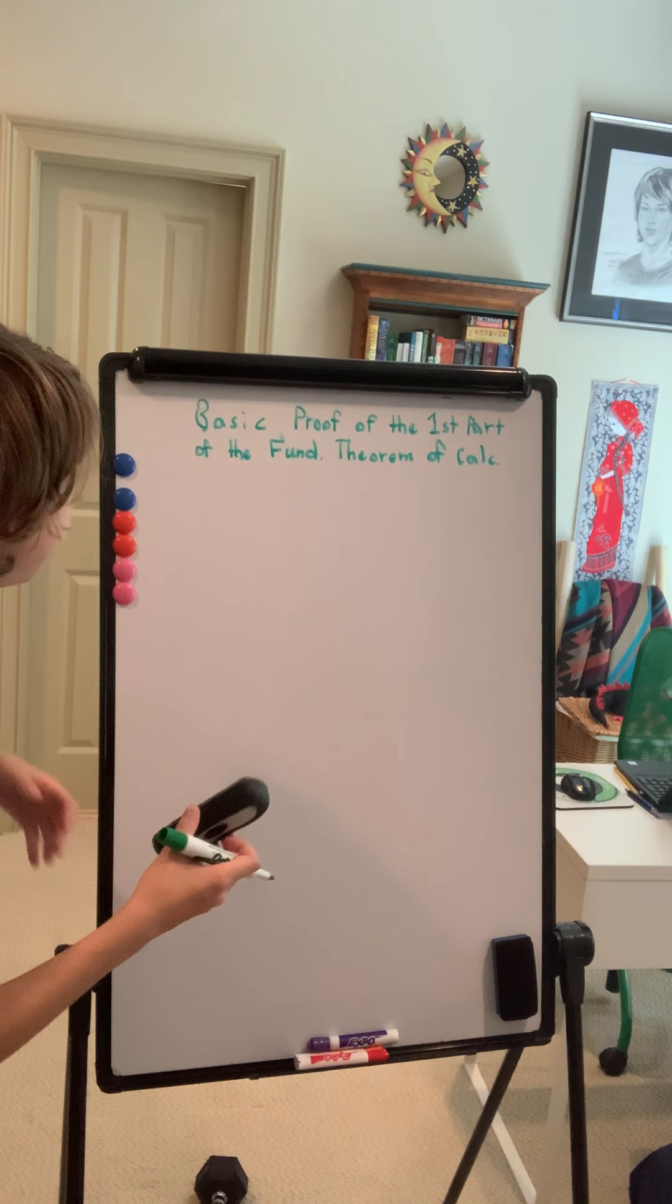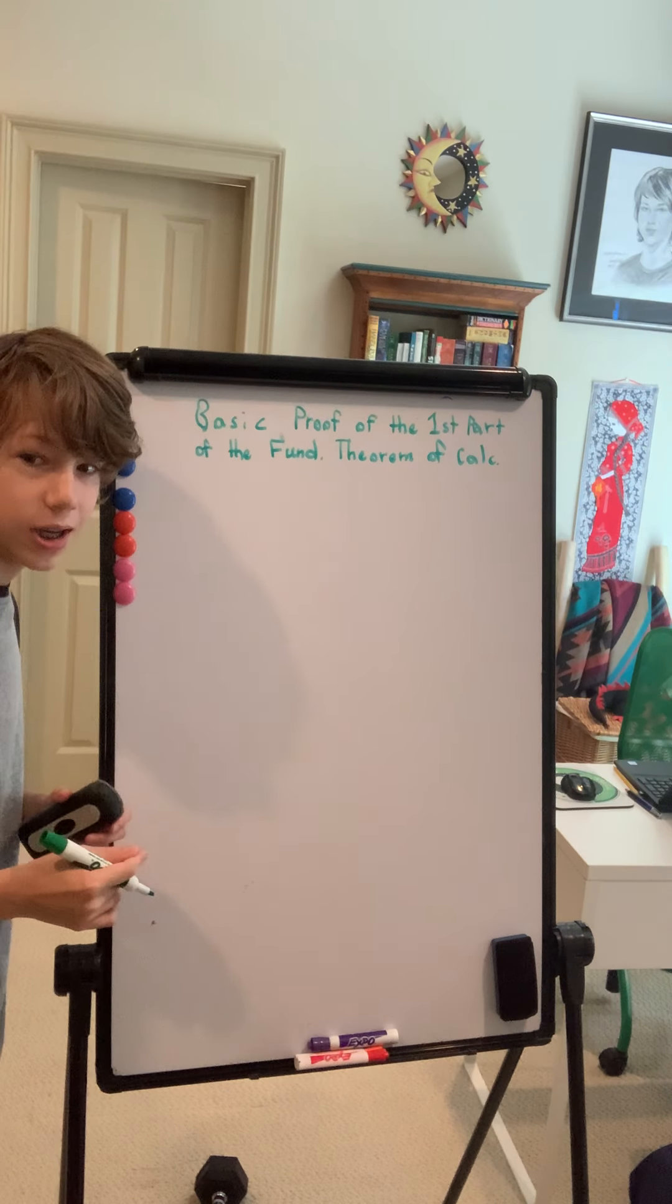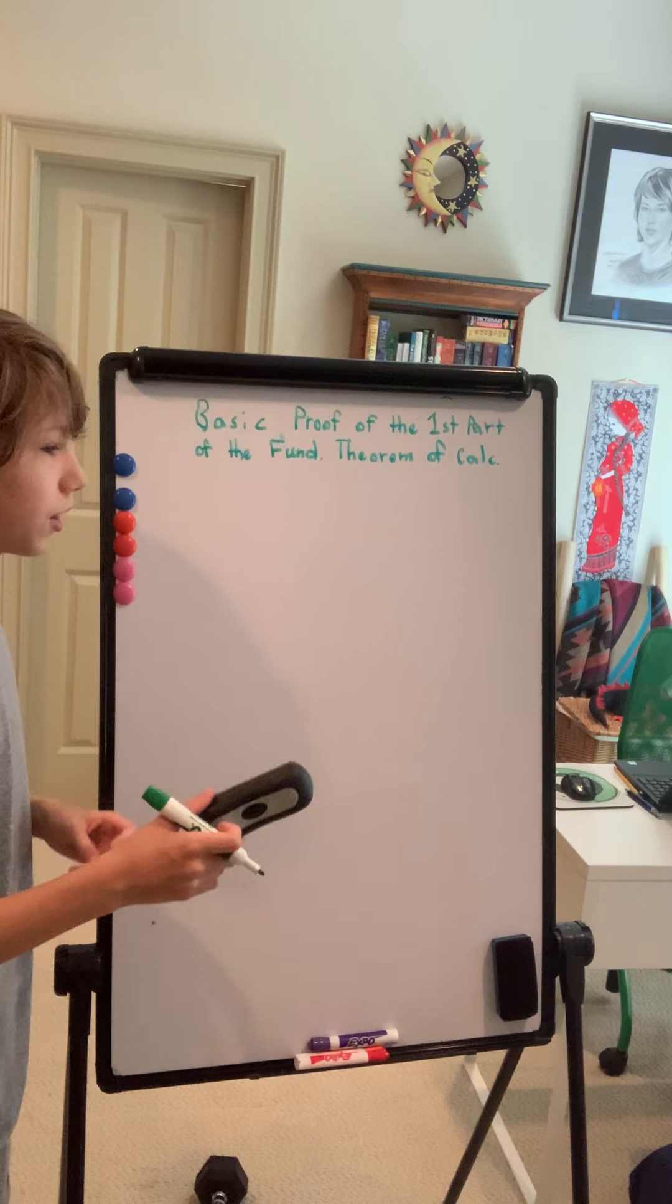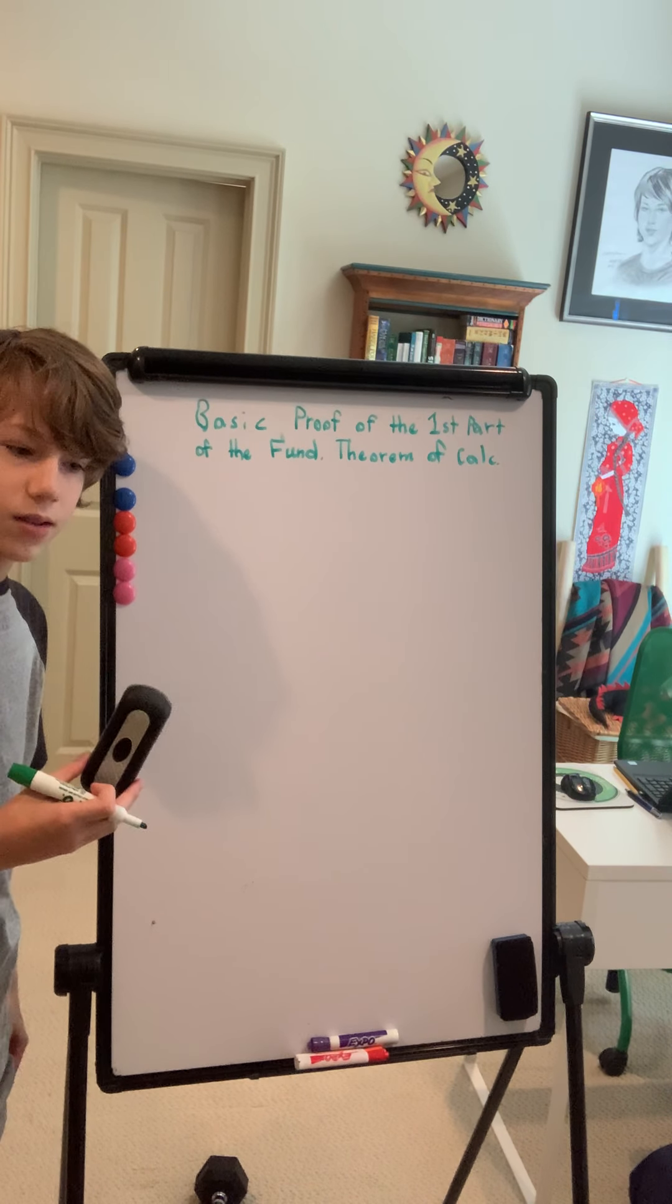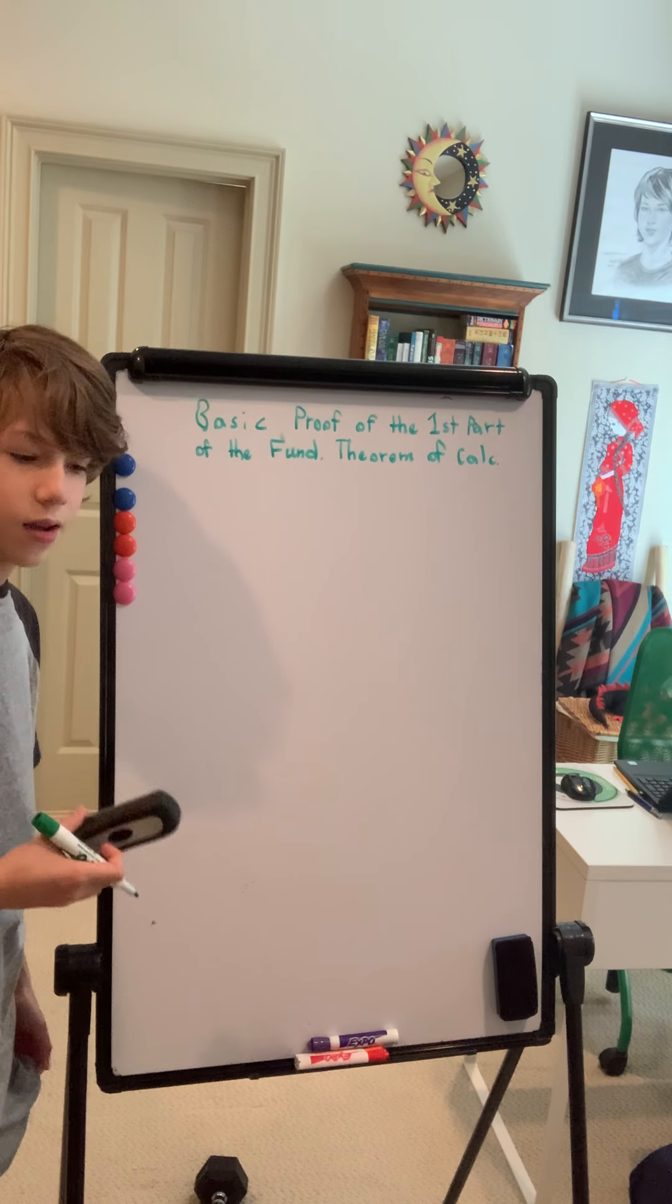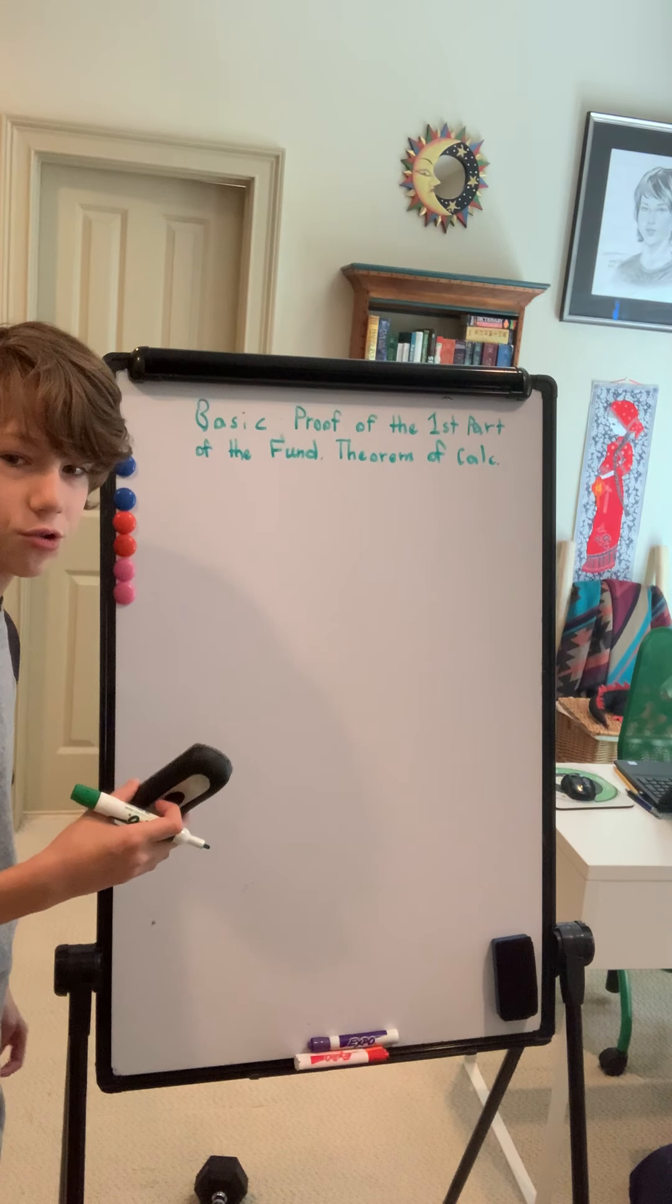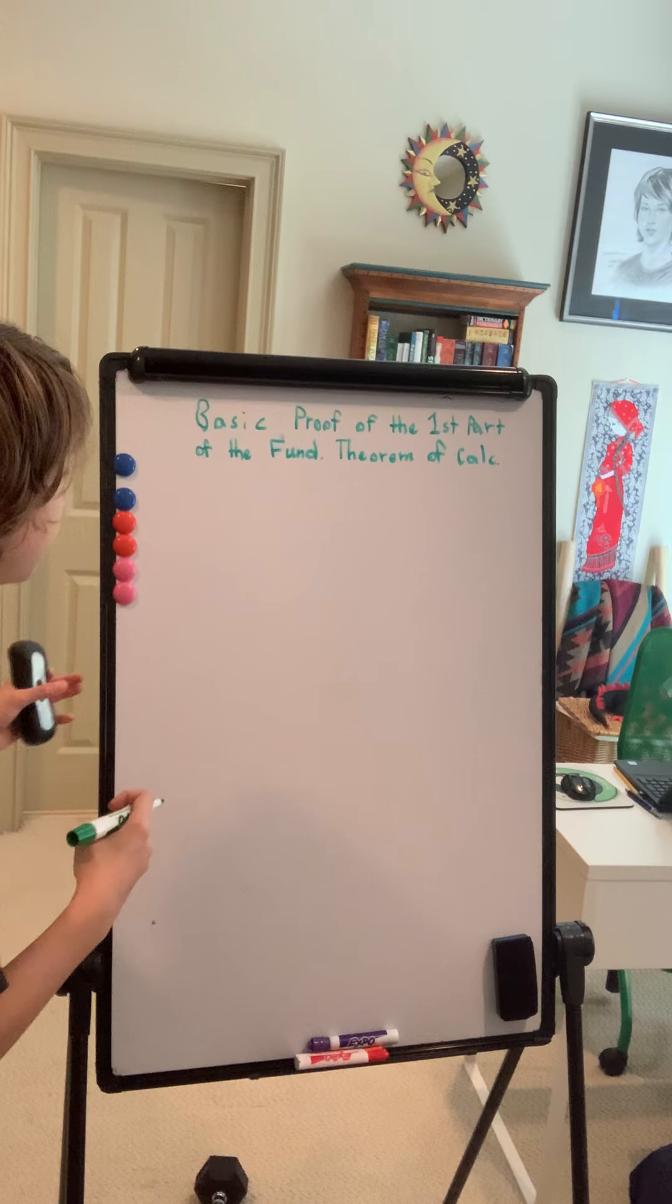I'm going to be covering a basic proof of the first part of the fundamental theorem of calculus, that is, the fact that if you take the derivative with respect to x of some integral from some constant a to x of f of t dt, then you'll actually receive the original function f of x back. So, why don't we get started?